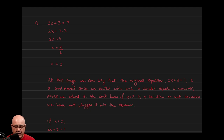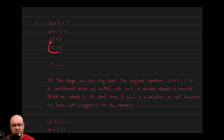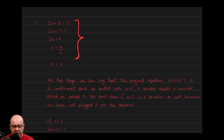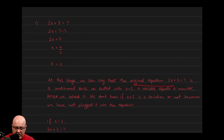Here's a simple example: 2x plus 3 equals 7. To solve it, we first subtract 3 from both sides, giving us 7 minus 3, which is 4. So now we have 2x equals 4. Dividing both sides by 2, we get x equals 2. Since we ended with a variable equals a number, the original equation must be a conditional.